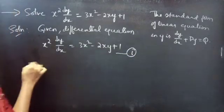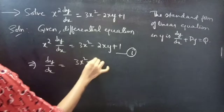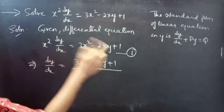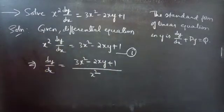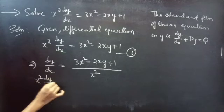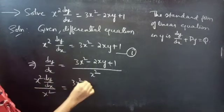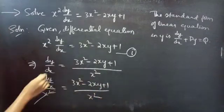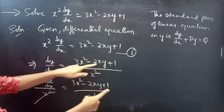Dividing both sides by x squared: x squared times dy by dx divided by x squared equals 3x squared minus 2xy plus 1 all divided by x squared. Here x squared cancels from the left-hand side, giving dy by dx equals 3x squared minus 2xy plus 1, all over x squared.